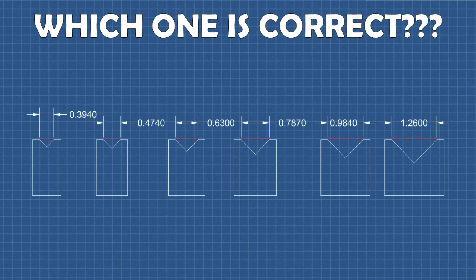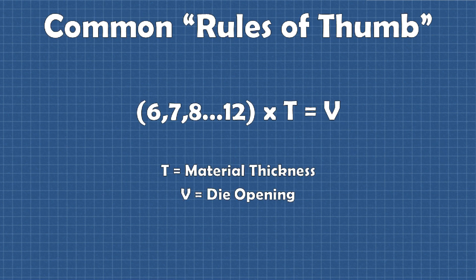There are a number of rules of thumb out there which guide the selection of v-die size. Common ones that I've heard are six, seven, or eight times material thickness. I've even heard all the way up to ten or twelve times material thickness. So this right there tells us that these rules of thumb are open to guessing, variation, or difference of opinion.